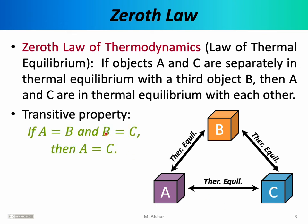The zeroth law of thermodynamics might remind you of the transitive property from mathematics. In mathematics, we learn that if A equals B and B equals C, then A must equal C. This is known as the transitive property, and it describes essentially a property of the equality sign. It holds true for any set of mathematical objects A, B, and C — they could be ordinary numbers, complex numbers, vectors, matrices, tensors, or any mathematical objects — and the transitive property would hold for them.